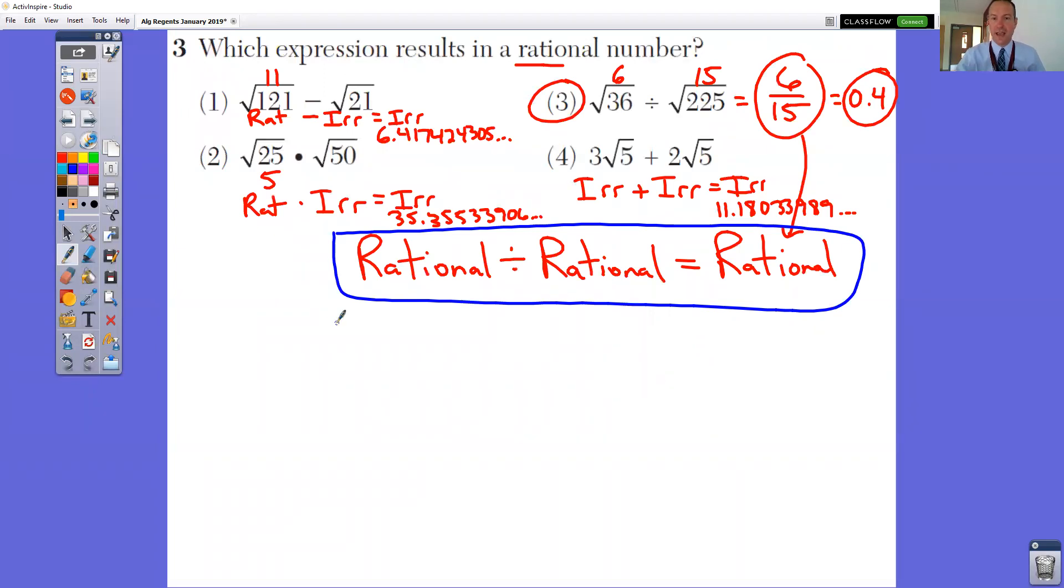Which expression results in a rational number? Well, one of the things that you need to remember, the correct answer is choice number 3. Anytime that you divide a rational number divided by a rational number, it gives you a rational answer.